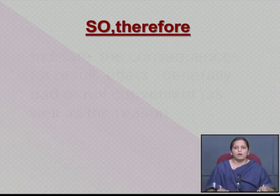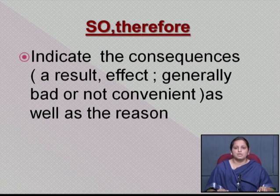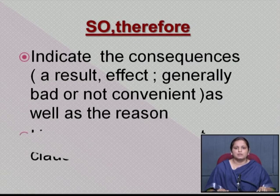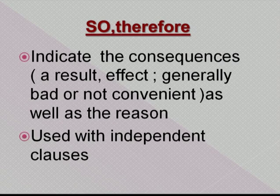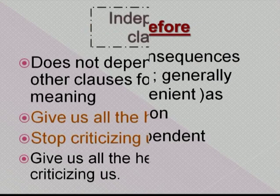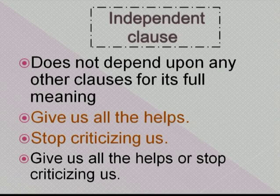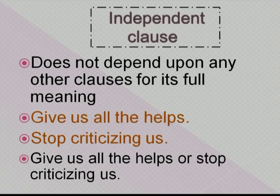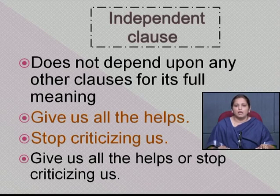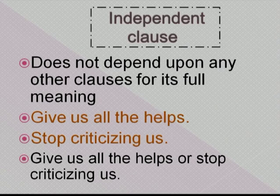'So' and 'therefore' are connectors which indicate consequences — a result or fact, generally bad or inconvenient, as well as the reason. These connectors are used with independent clauses — clauses that do not depend on any other clause for their full meaning. For example: 'Give us all the help' and 'Stop criticizing us' are both independent clauses; they do not depend on each other for their complete meaning.